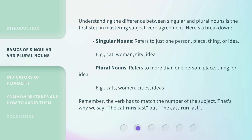Understanding the difference between singular and plural nouns is the first step in mastering Subject-Verb Agreement. Here's a breakdown. Singular nouns refer to just one person, place, thing, or idea. For example: cat, woman, city, idea.